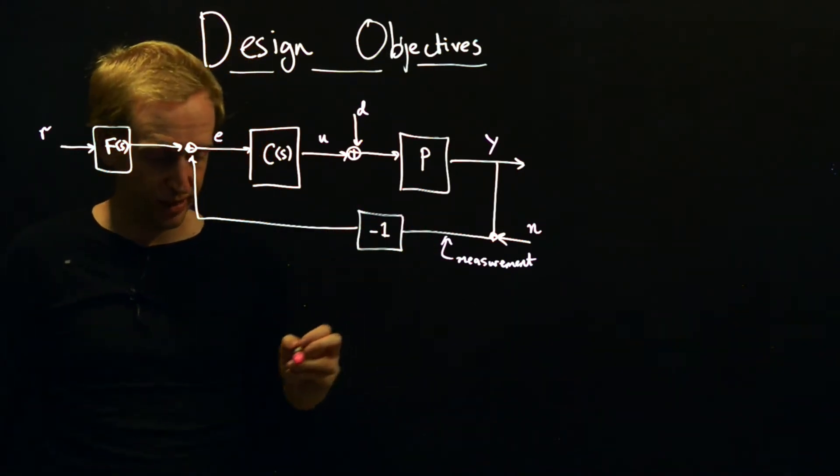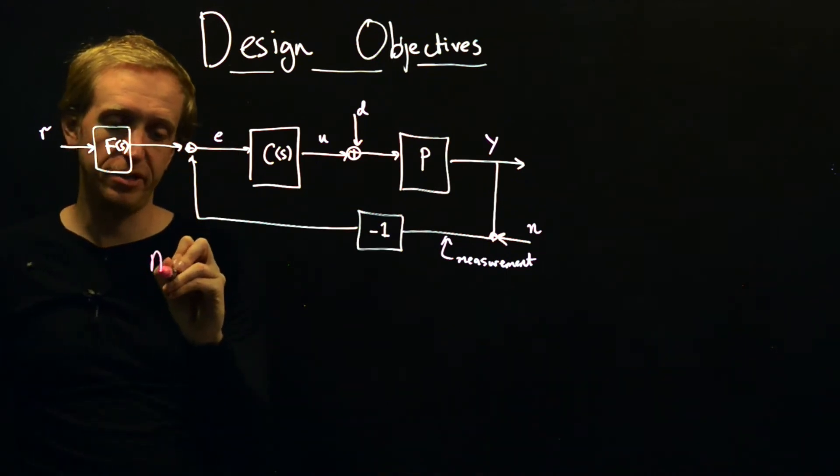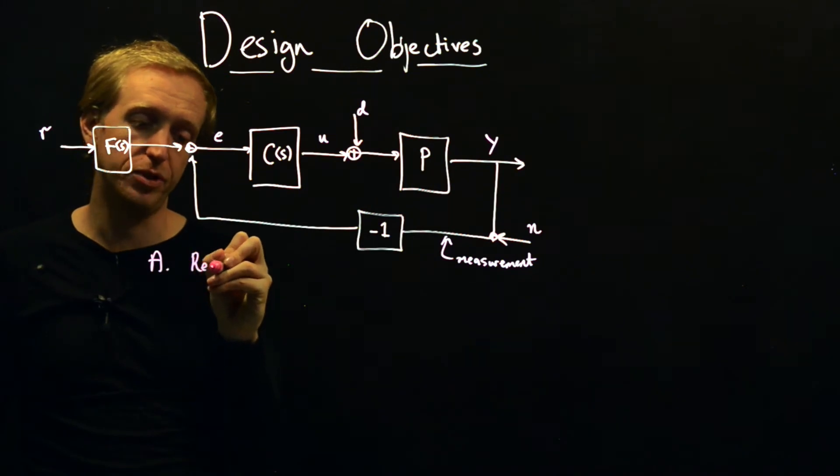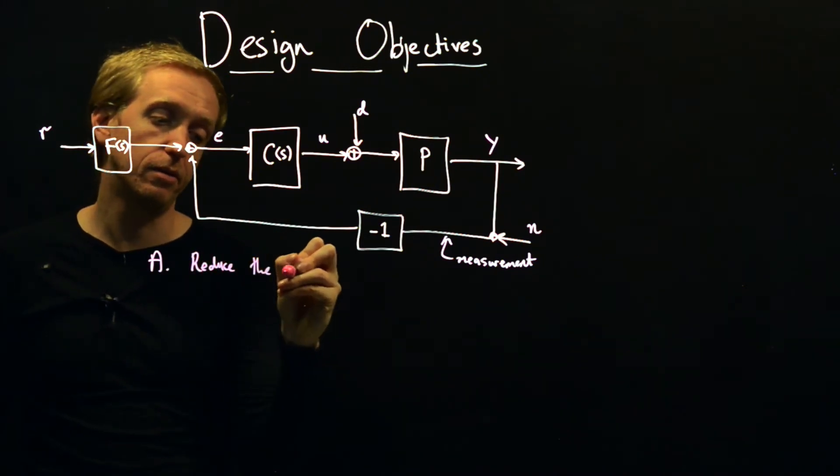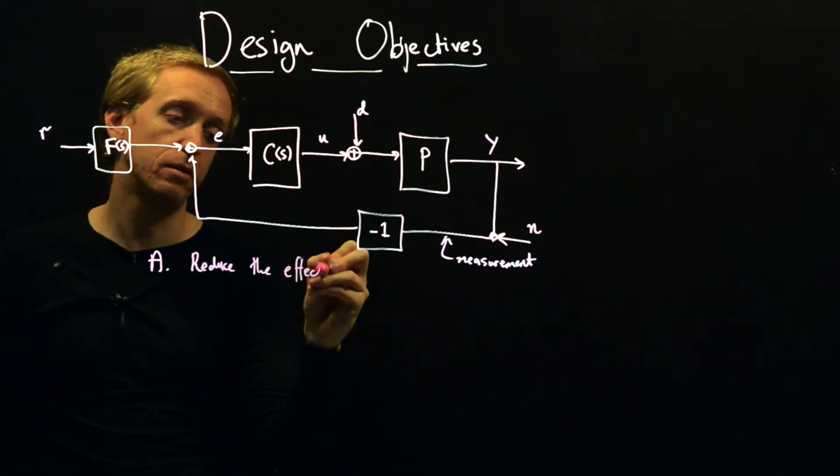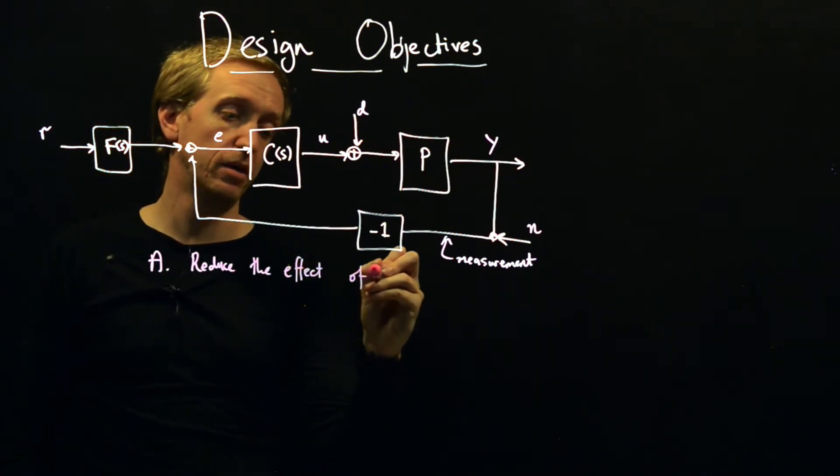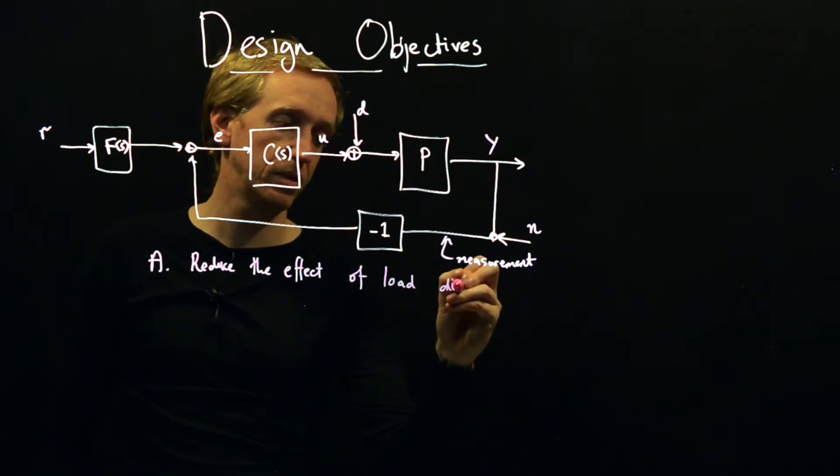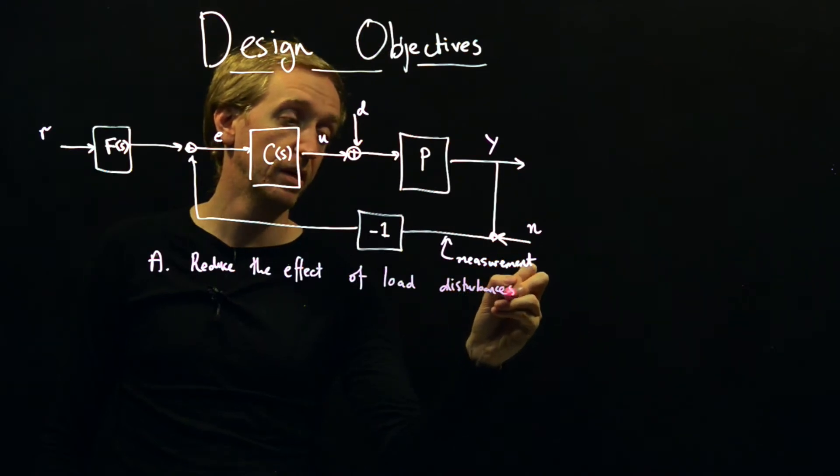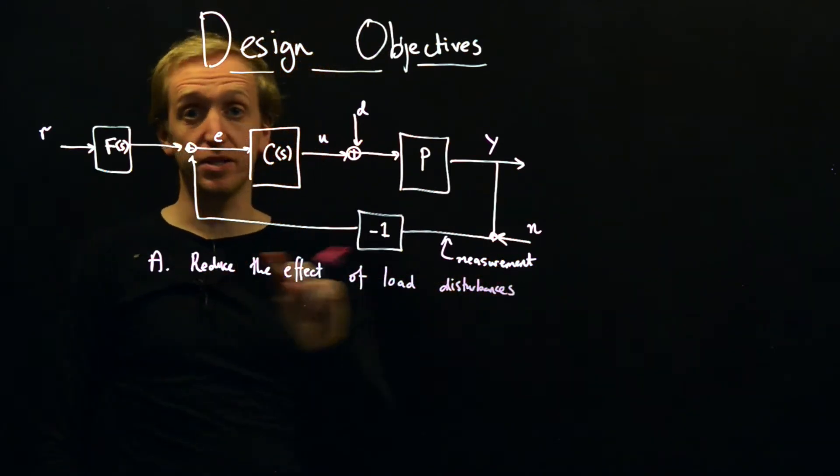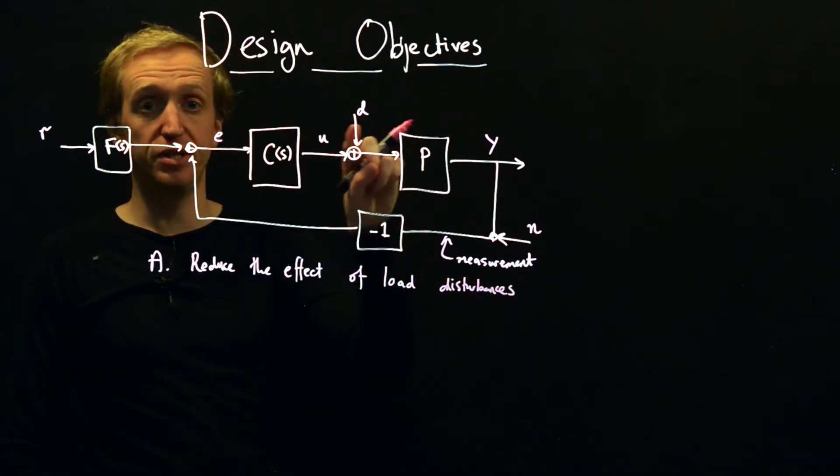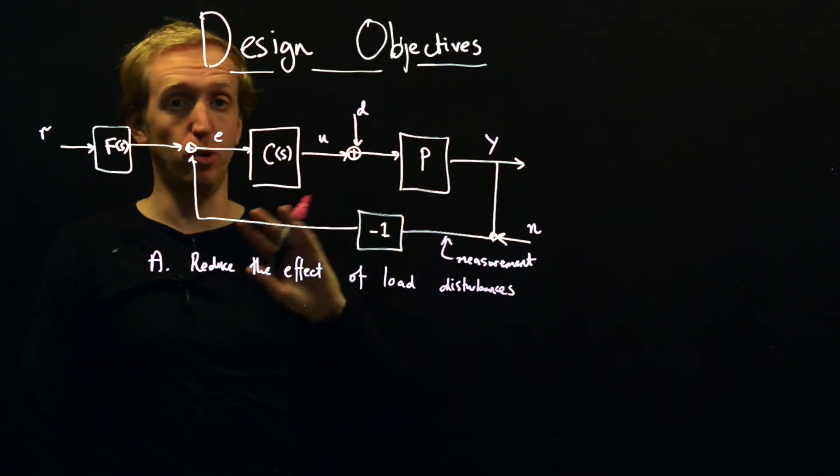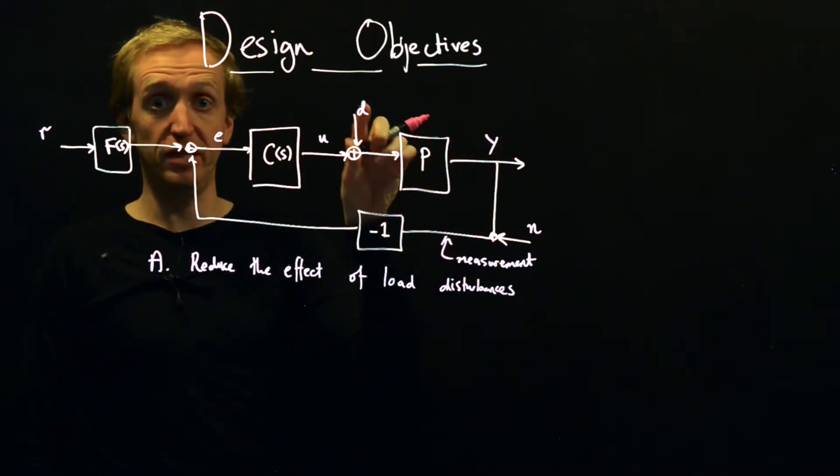And let's now list out some of the common design objectives. So our first design objective A: we want to reduce the effect of load disturbances. So this is our first feedback objective. We have these external disturbances that are affecting the output of our process and we want to remove the effect of these disturbances D.